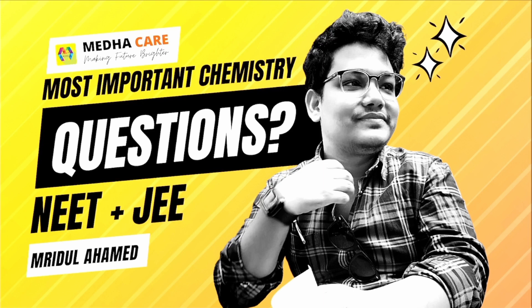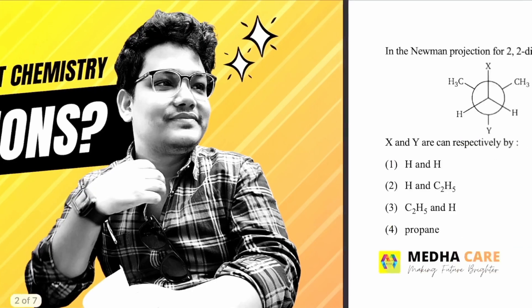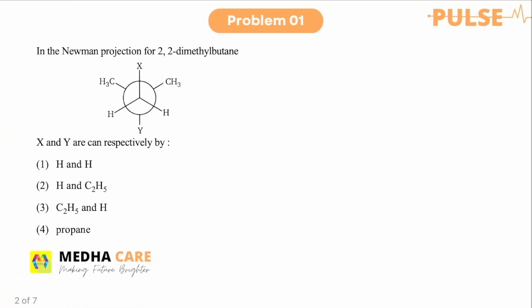Hello and welcome to Medha Care. Without wasting time, let us start with the questions. The first question is: in the Newman projection of 2,2-dimethylbutane, we have to find out the groups X and Y.